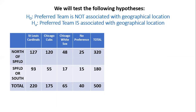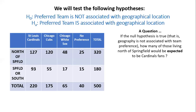Here's an interesting question about one of the cells of data. If the null hypothesis is true — that geography is not associated at all with team preference — how many of those living north of Springfield would be expected to be Cardinals fans? We can see from the table that 127 people who lived north of Springfield were observed to be St. Louis Cardinals fans.